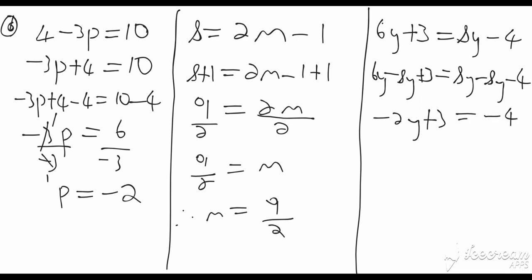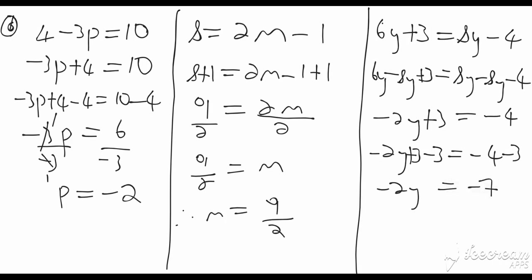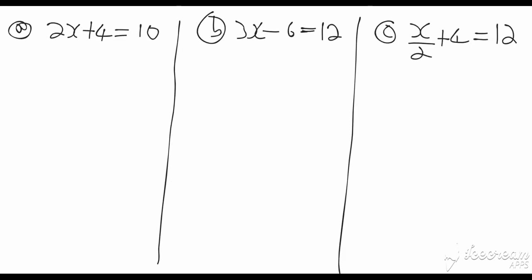Now we get rid of the positive three by subtracting three from both sides: negative two y plus three minus three equals negative four minus three, giving negative two y equals negative seven. To get y we divide both sides by negative two: y equals negative seven over negative two. A negative divided by a negative gives a positive, so y equals seven over two. We leave it as an improper fraction.